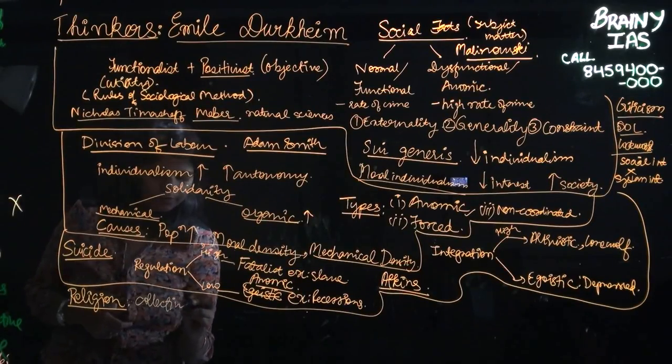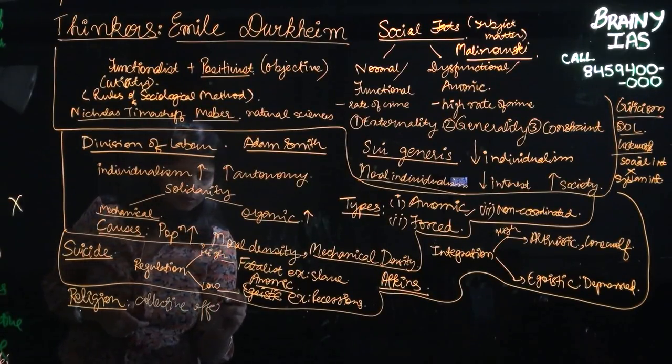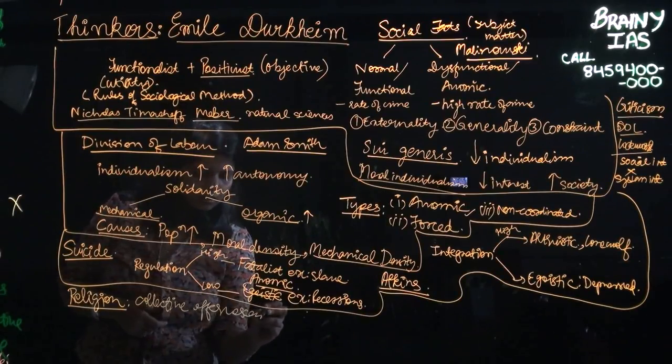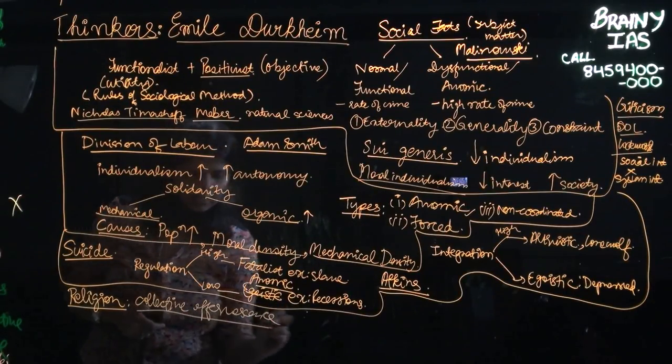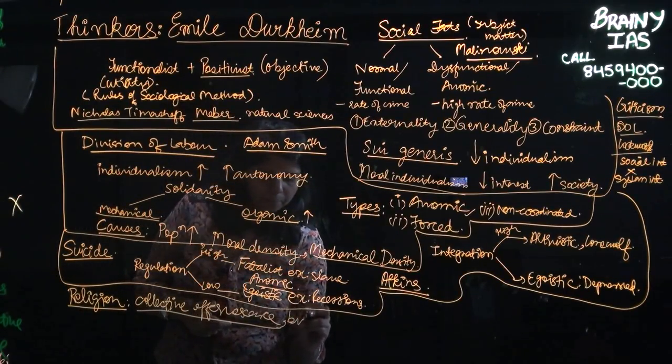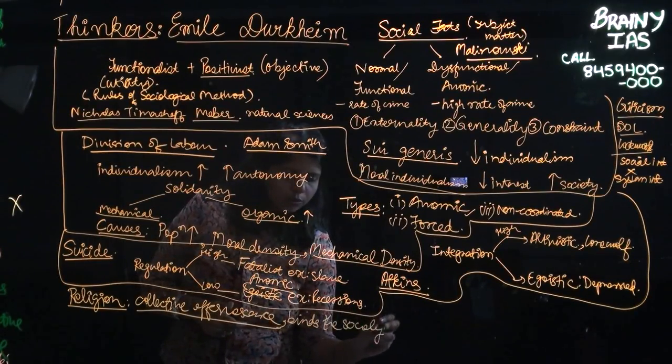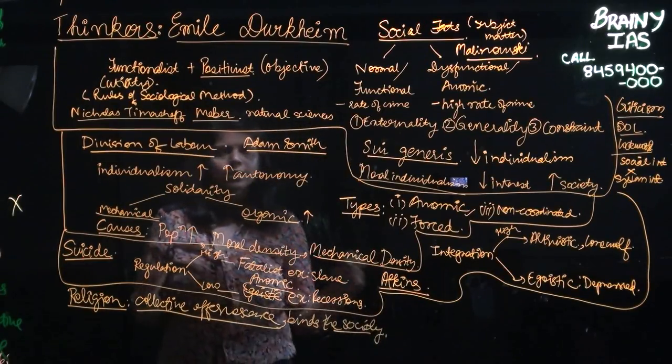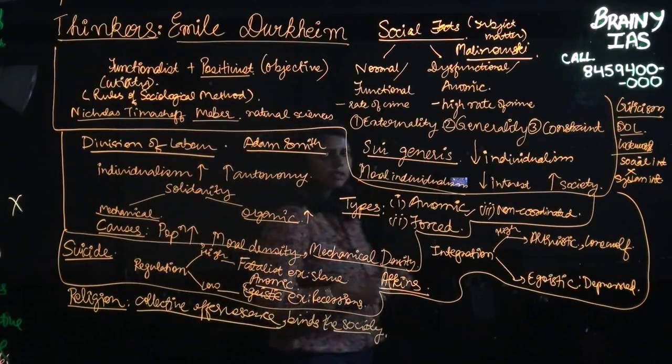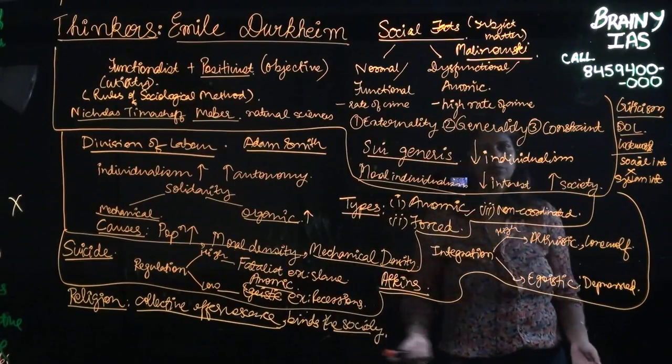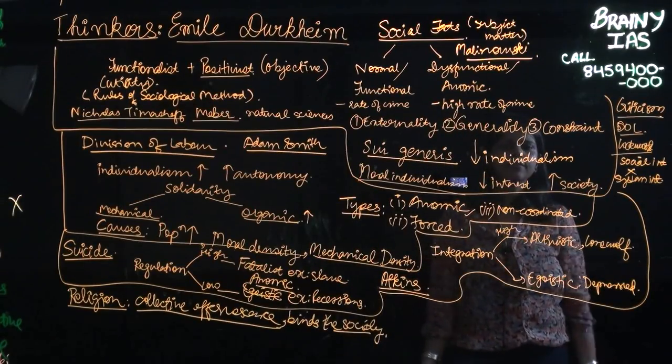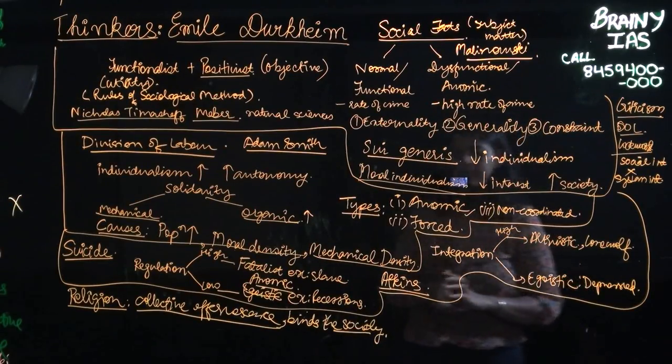And this, in turn, binds the society together. So you see, all through Durkheim has this common underlying theme that it is the society which is greater than the individual. He does not really give importance to the individual identity.